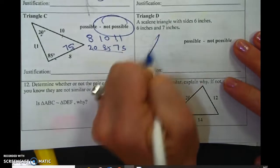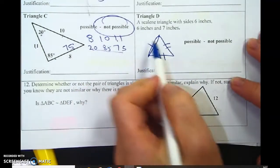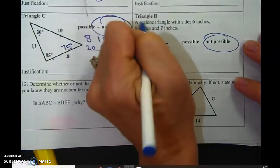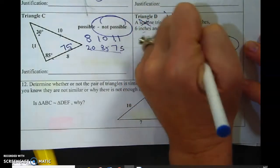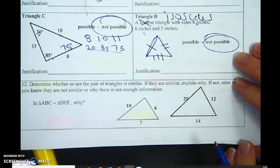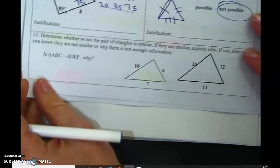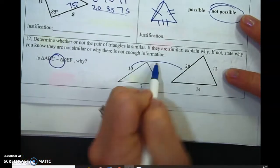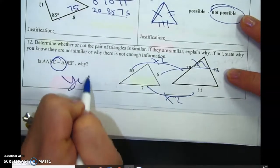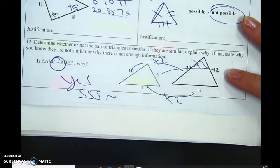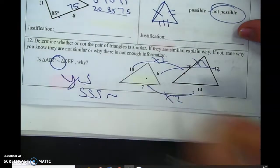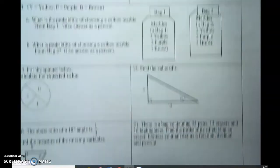This is saying a scalene triangle. A scalene triangle is when all three sides are different. This is an isosceles triangle. An isosceles is when two of the sides are the same and one of them is different. Equilateral means all of them are the same. So they want to know if they're similar. So that means this is times two, this is times two, and this is times two. Yes, based on side, side, side similarity. And just to let you know, it dilated by a factor of two.